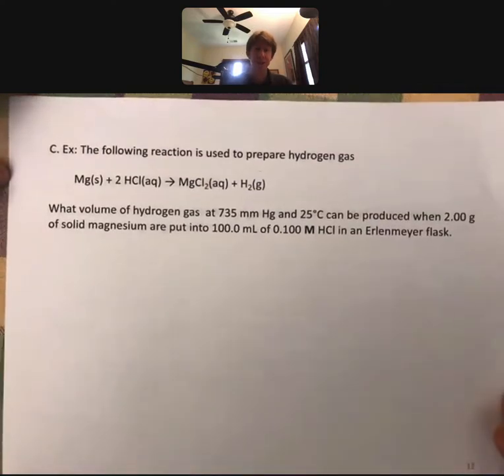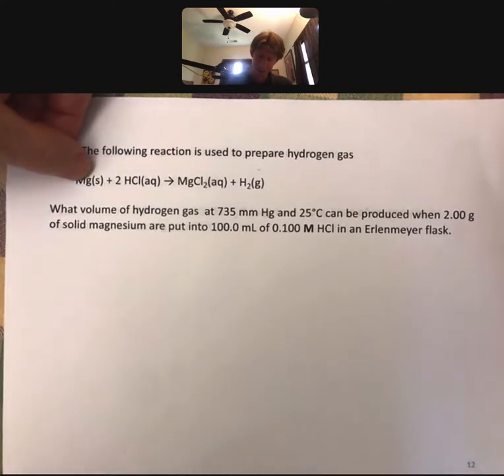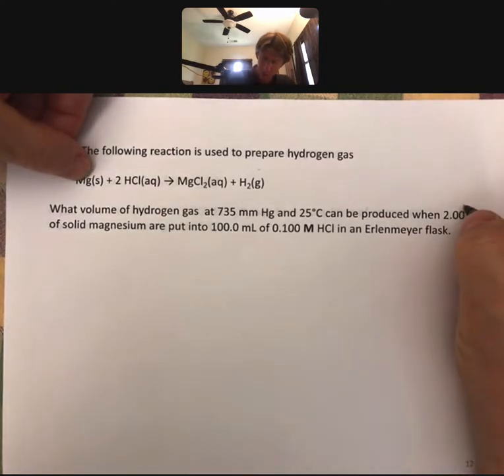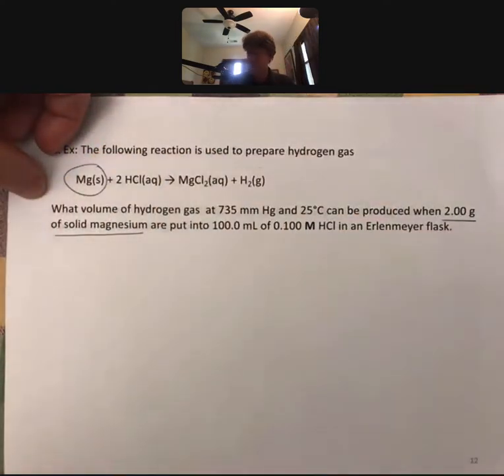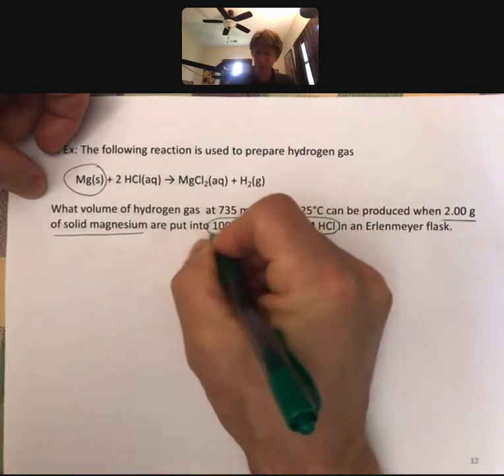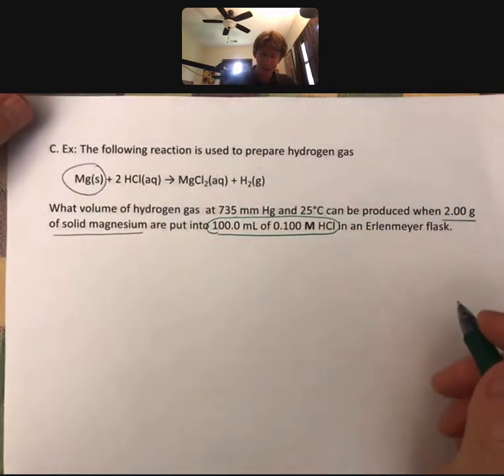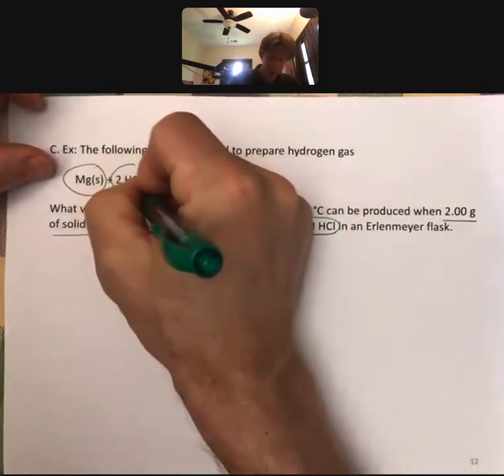Here is an example in which we use what we've just learned about solution stoichiometry, or solution picket fences, and we integrate what we've done before with picket fences involving grams of solid. We have 2.0 grams of solid magnesium. We also have 100 milliliters of 0.100 molar HCl, and those are going to be our two reactants, and I'll just sort of color code them.